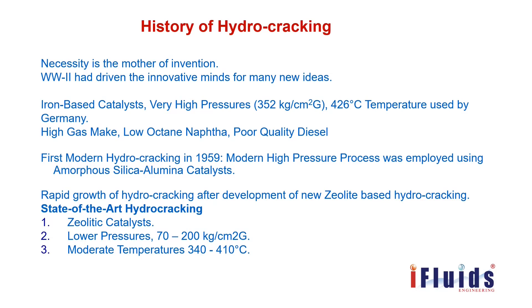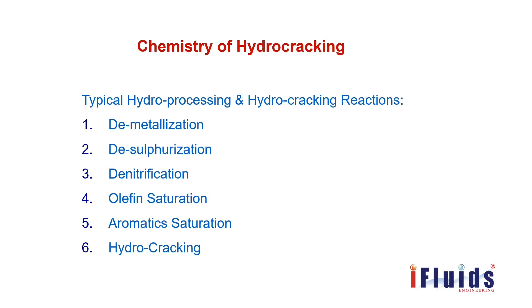However, in the vacuum column, certain products called vacuum gas oil (VGO) are not directly usable. To convert VGO into usable, value-added products, secondary processing units were introduced — and the hydrocracker is one of the most important. Early units used iron-based catalysts at very high pressure and temperature, producing high gas make, low-octane naphtha, and poor-quality diesel. The first modern hydrocracking was introduced in 1959, employing amorphous silica and alumina catalysts. Rapid growth followed the development of zeolite-based hydrocracking, which operates at lower pressure — 70 to 200 kg per centimeter square gauge — and moderate temperature of 340 to 410 degrees Celsius.